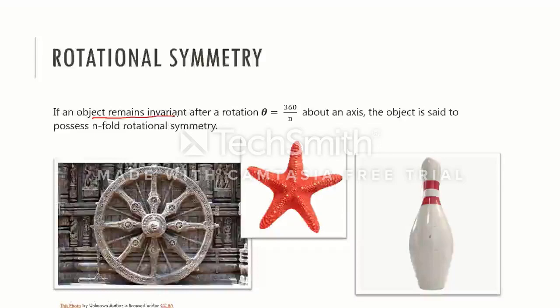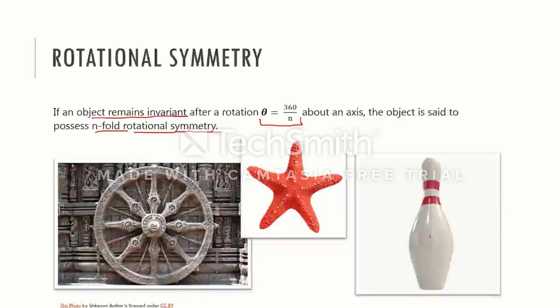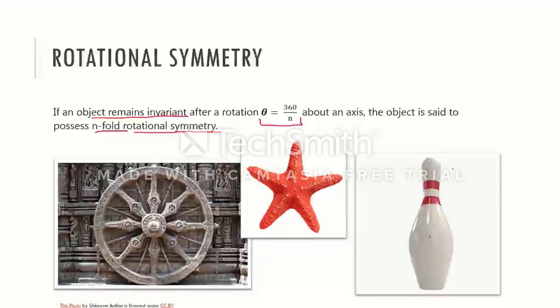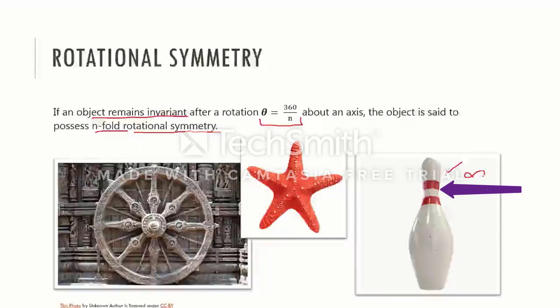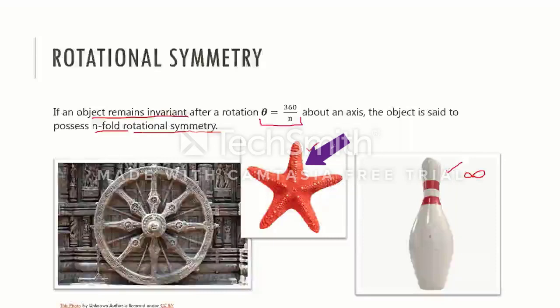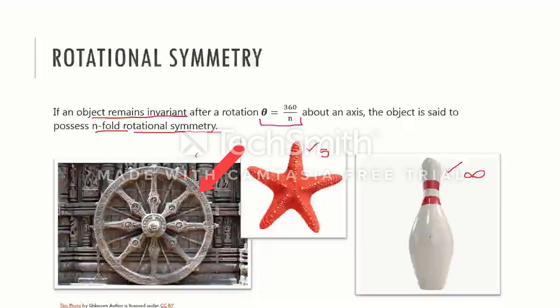If the configuration of an object remains unchanged after a rotation by theta, which equals 360 divided by n about an axis, then we say that object has n-fold rotational symmetry about that axis. Rotation operator rotates a general point in the space around the axis in such a way that the final configuration looks exactly like before. So, for macroscopic objects, there is no limit for the order of rotational symmetry. For instance, this bowling pin has an infinite-fold axis of rotation. This starfish has a five-fold axis of rotation, and this wheel has an eight-fold axis of rotation.